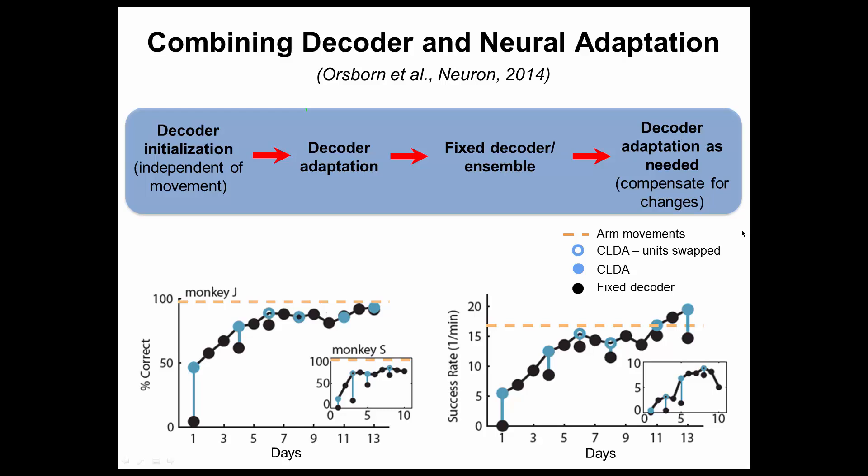Having studied separately decoder adaptation and neural adaptation, the question now is how to combine them. We envision doing this in two different scenarios. One is in early learning, where the decoder will adapt in closed-loop to a certain level of performance, after which it will be fixed to facilitate cortical plasticity — in other words, getting the brain to learn something specific about that decoder. After that point, we will adapt only when needed, for example if there is noise in the system that causes performance to drop on a given day, and we adapt to bring it back up.